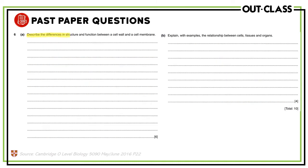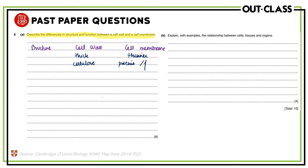The next question asks: describe the differences in structure and function between a cell wall and a cell membrane. In terms of structure, one important difference is that the cell wall is thicker and the cell membrane is thinner. Second, the cell wall is made of cellulose, but the cell membrane is made up of proteins and fats — so their composition is different. Additionally, the cell wall is the outermost structure in plant cells, while the cell membrane is the outermost structure in animal cells.